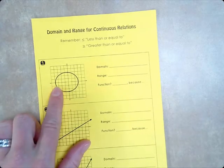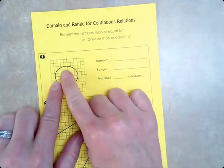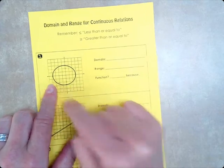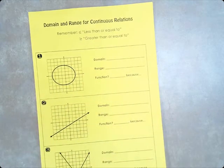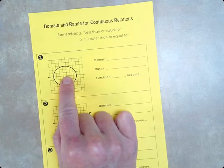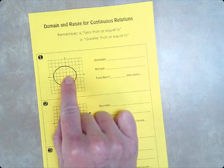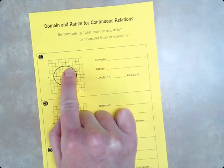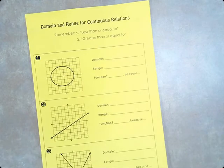But on here, because they are connected like this, we cannot list all possible x values. Because I would have to list out, say 1.3, 1.33, 1.33333, 2, 2.1. Because it continuously connects.